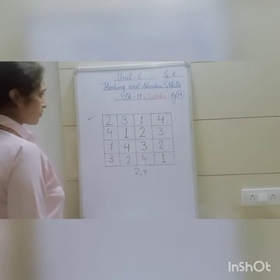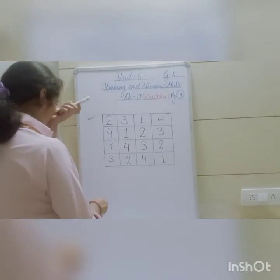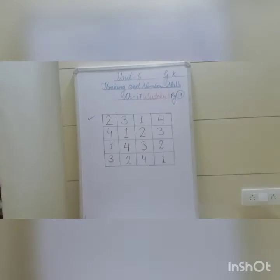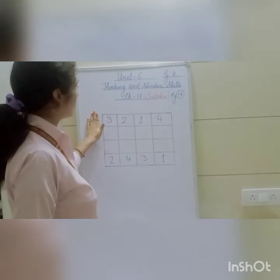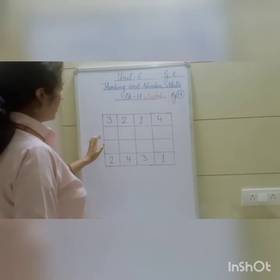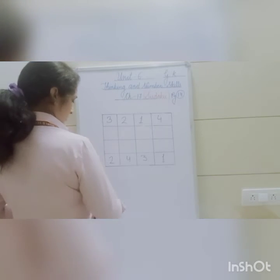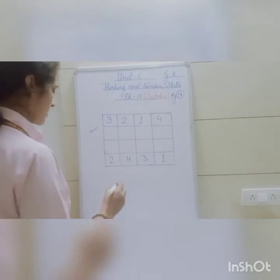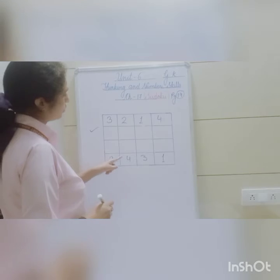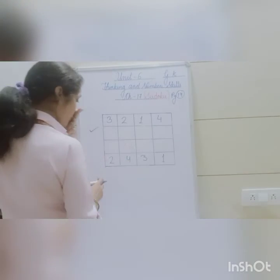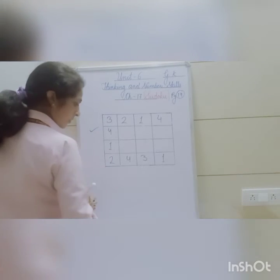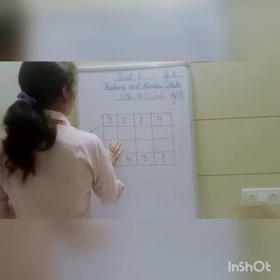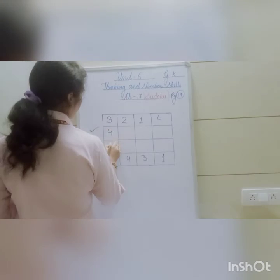Now we are going to do the second Sudoku. In the second puzzle, the first row is already complete: 3, 2, 1, 4. For the second row, 2 and 3 are already given, so we can fill 4 and 1 in the blanks. Let me use black so it is visible properly. So here will be 4 and here will be 1.